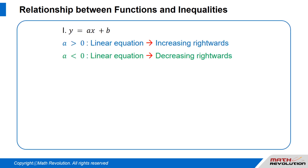Case 1: y equals a times x plus b. When a is positive (a is greater than 0), the linear equation will result in a line increasing as we move rightwards.